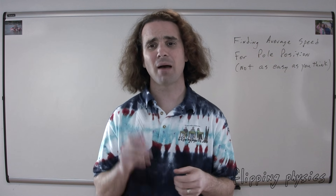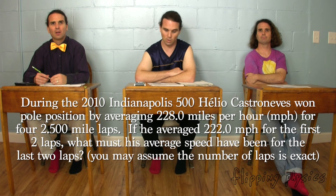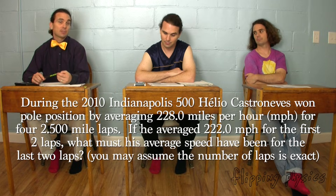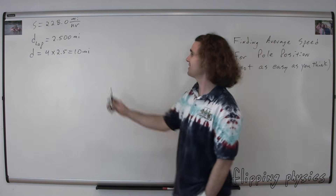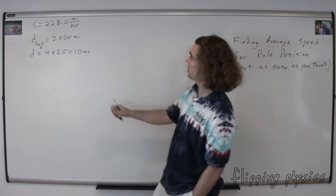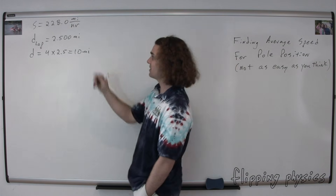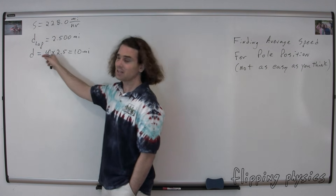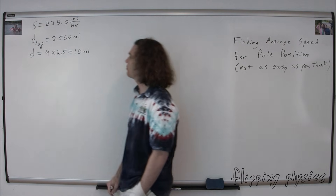Good, now let's translate to physics. Bobby, could you please read? And Billy, could you please translate? Helio Castroneves won pole position by averaging 228.0 miles per hour for four 2.500 mile laps. Speed equals 228.0 miles per hour, and distance equals 10 miles. The speed is 228.0 miles per hour and the distance is equal to 10 miles. But notice I didn't write just the distance is equal to 10 miles — I wrote down the given value. I use S for speed and D for distance.